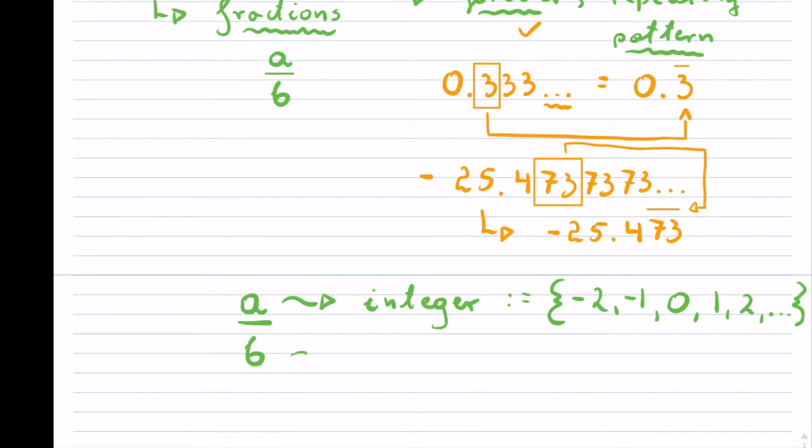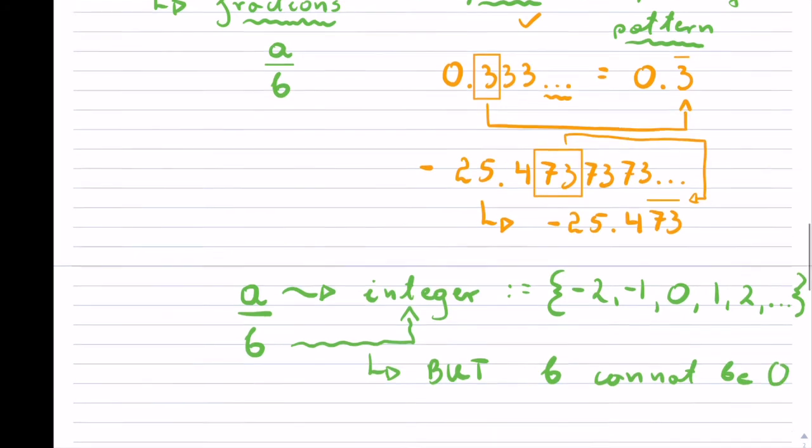If you look at B, it also has to be an integer. But, and this is a huge but, B cannot be zero. We can't divide by zero.